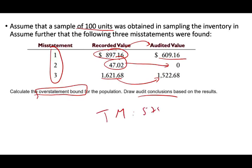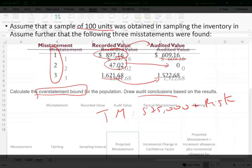Now what we need to do is calculate the overstatement bound and draw a conclusion about whether the population is acceptable — specifically, is the population fairly stated as presented? We need to figure out what's called the upper misstatement bound. We know the tolerable misstatement is $575,000, and we're going to add to this something called allowance for sampling risk. If that upper bound exceeds $575,000, we say the population is not fairly stated. It's best to work this in an Excel sheet.